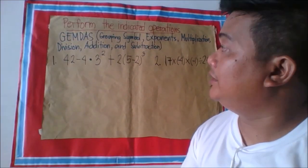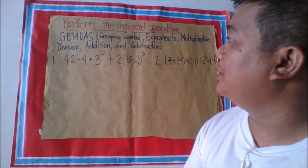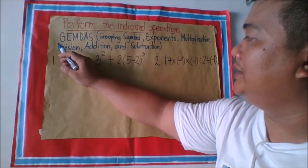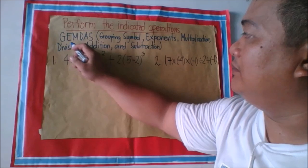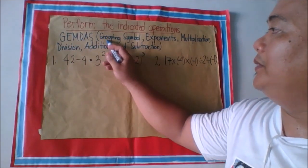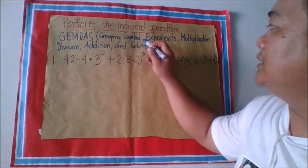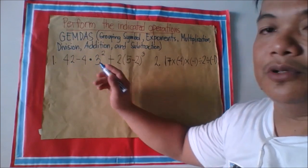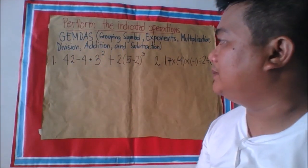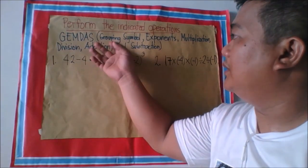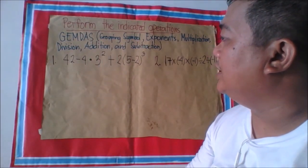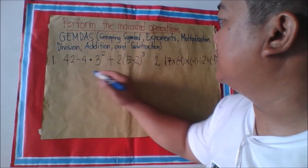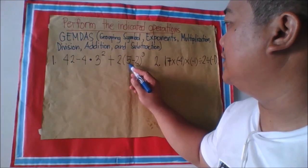Okay, so we have here: perform the indicated operations on integers. We are going to use GEMDAS. GEMDAS stands for: G - Grouping symbols, E - Exponents, M - Multiplication, D - Division, A - Addition, and S - Subtraction. We are going to follow that order of operations for this expression.